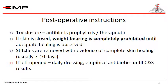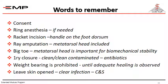If you decide on primary closure, consider prophylactic or therapeutic antibiotics. If the skin is closed, weight bearing is completely prohibited until adequate healing is observed. Sutures are removed with evidence of complete skin healing, which usually occurs within seven to ten days. If the stump is left open — usually because of evident contamination, pus, or infection — the wound is dressed daily. Empirical antibiotics are given until culture and sensitivity results appear.